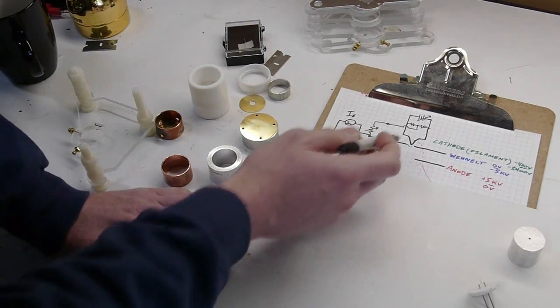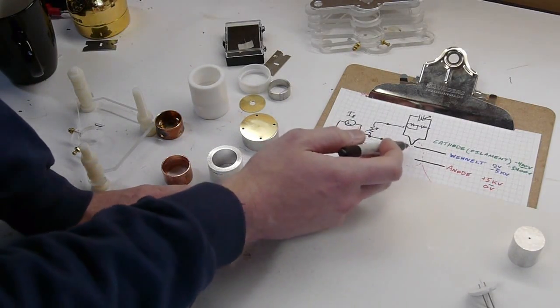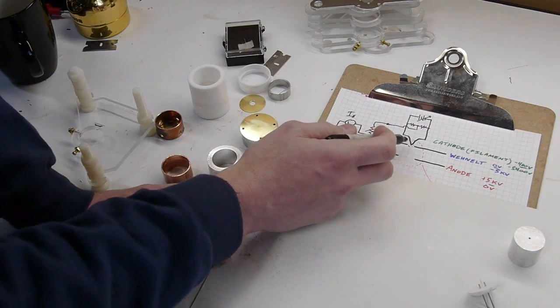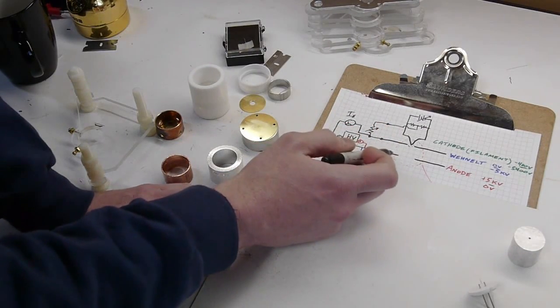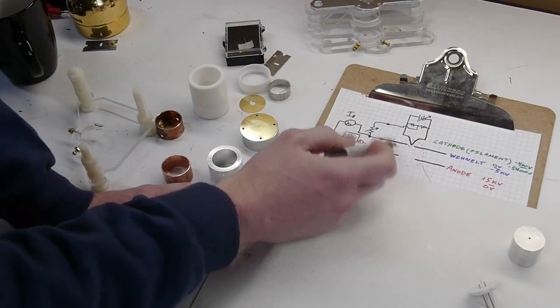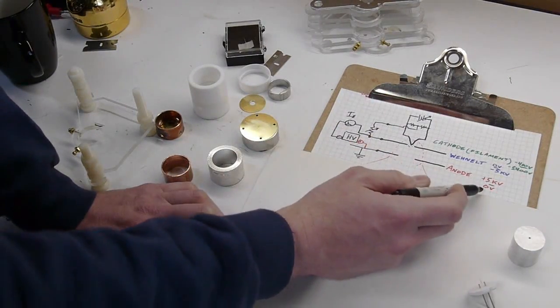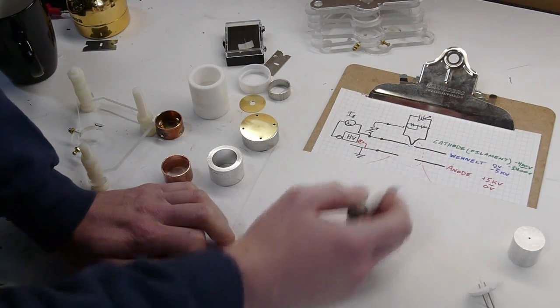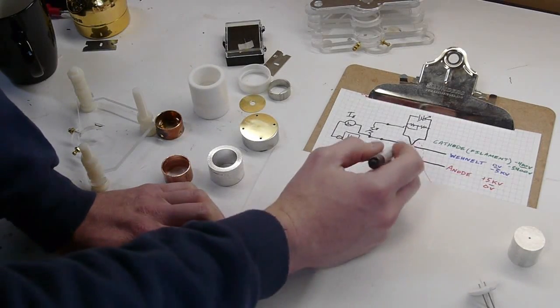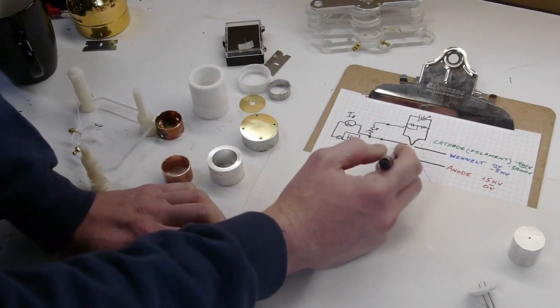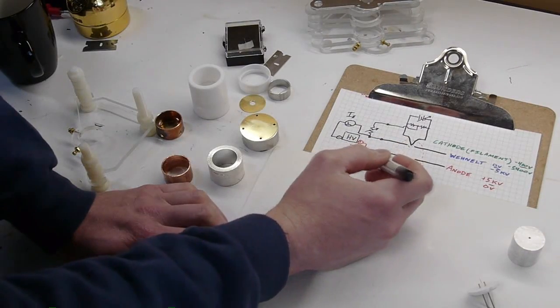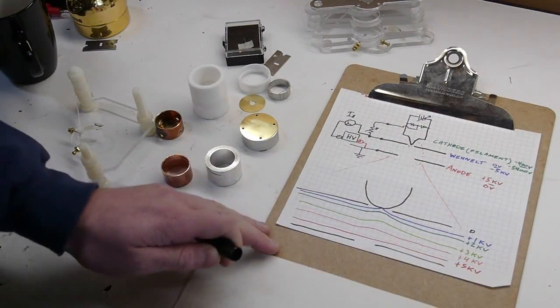So actually what's happening here is the electrons are liberated from the cathode and accelerated by the field, the electric field that's between the anode and the Wenelt. So if we're calling this anode 0 volts and the Wenelt is negative 5 kilovolts, there's a very strong electric field between these plates.